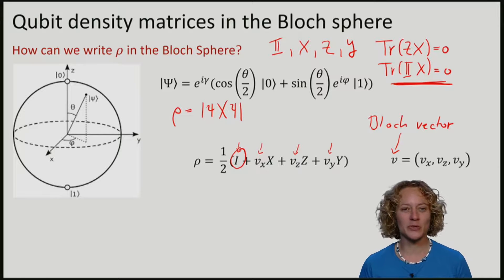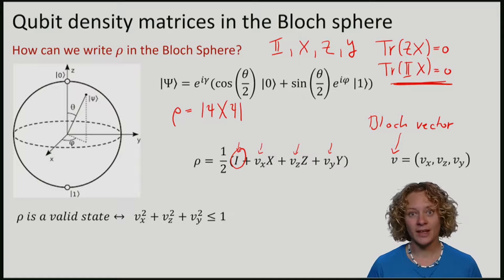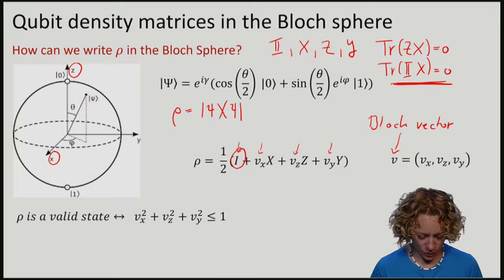Let's have a look at what this actually means. In the Bloch sphere, we often write the axes X, Z and Y.